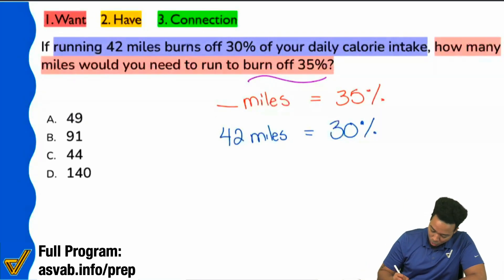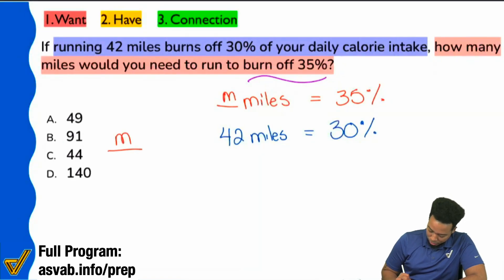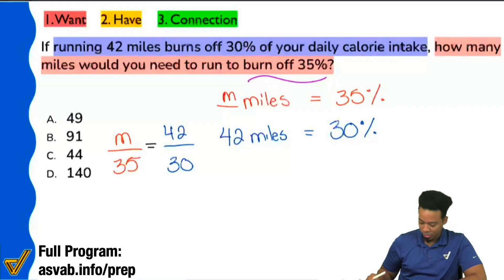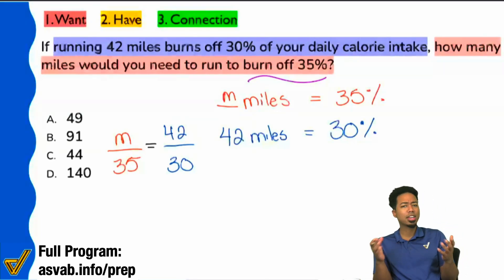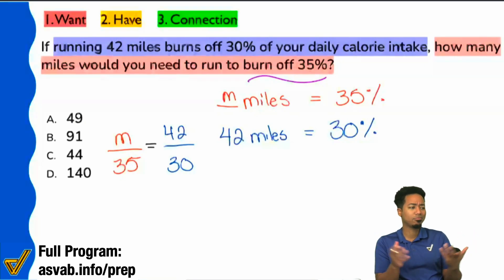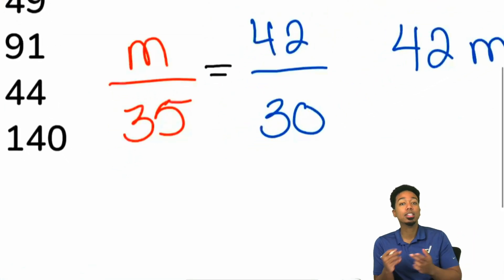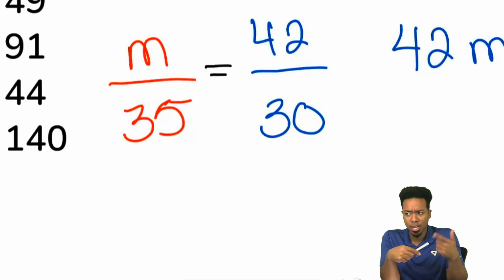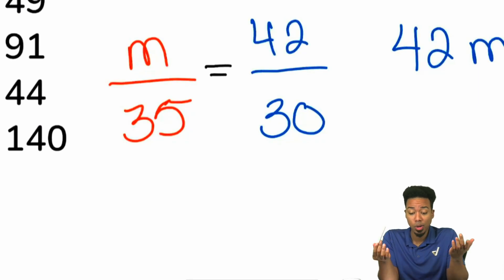I'll use M for miles. We'll have M over 35 equals 42 over 30. We can use X, we can use M — it's just a letter, pick whatever you want. How do we solve proportions? Cross-multiply and then divide.